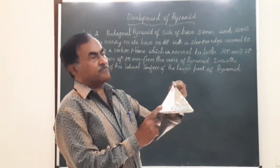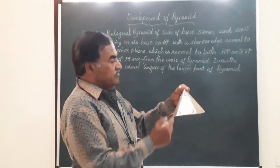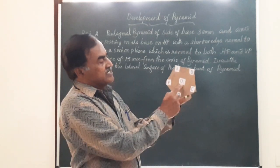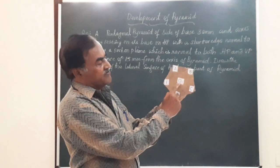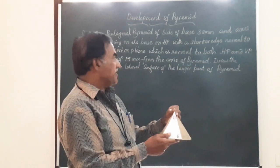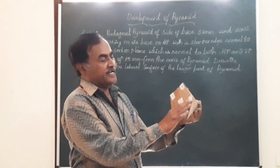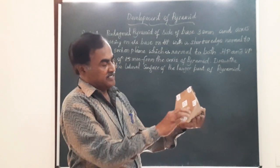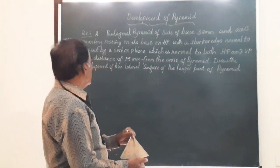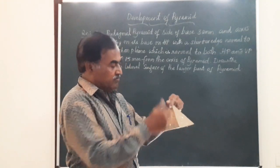This is a pentagonal pyramid having side AB equal to 30 mm. The vertical height of the solid measured from O, the vertex, till the center of the base at the bottom — the axis — is equal to 60 mm, resting on its base on HP. The pentagon ABCDE is the base, placed such that one of the short edges, AB, is normal to VP.